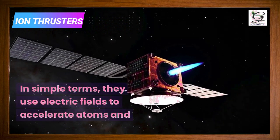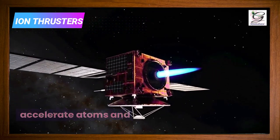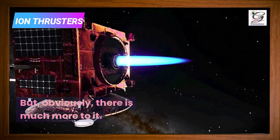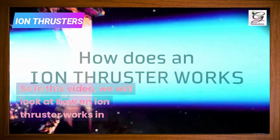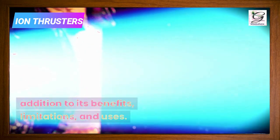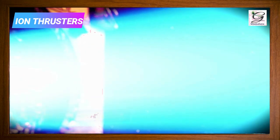In simple terms, they use electric fields to accelerate atoms and eject them at high speeds. But obviously there is much more to it. So in this video we will look at how an ion thruster works, in addition to its benefits, limitations, and uses.